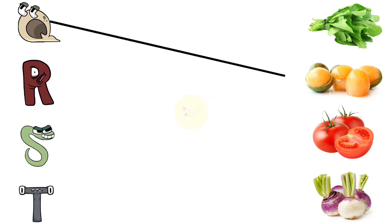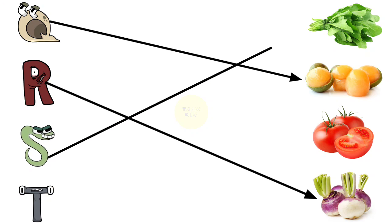Q for Quandong, R for Radish, S for Spinach, T for Tomato.